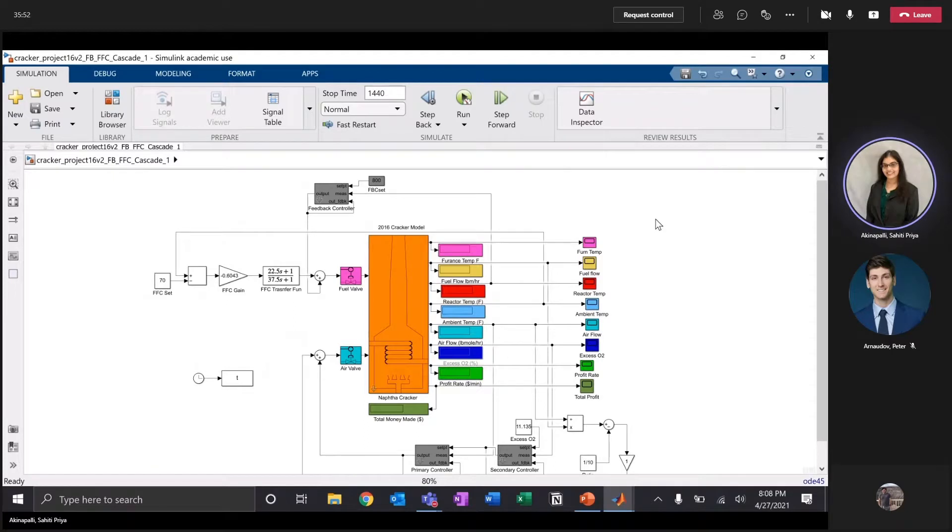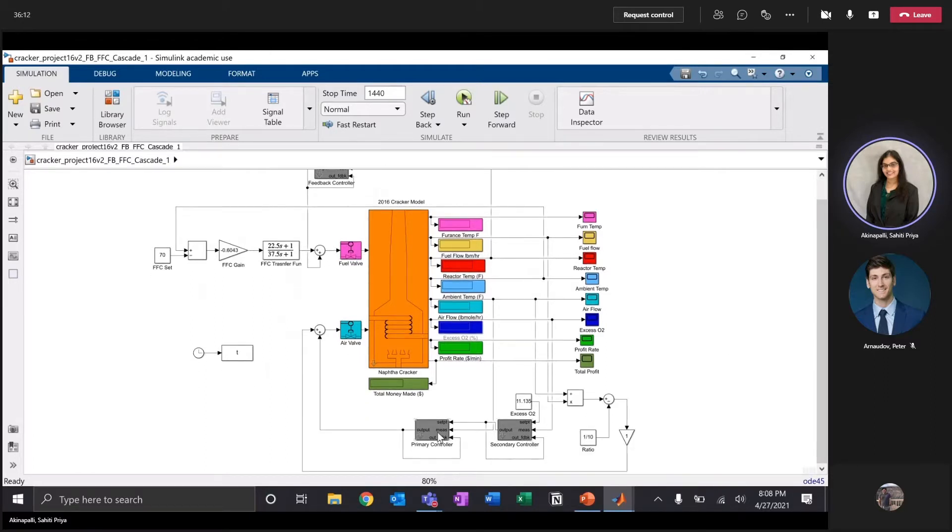Here is the control scheme for the NAFTA cracker process. First, there is a feedback controller from the reactor temperature to the fuel valve. Then, there is a feedforward controller to control the ambient temperature by adjusting the fuel valve. Further down, there is a cascade control loop, which controls the air valve based on the excess O2 and air flow, followed by a ratio control, which also adjusts the air valve based on the flow of fuel and flow of air.